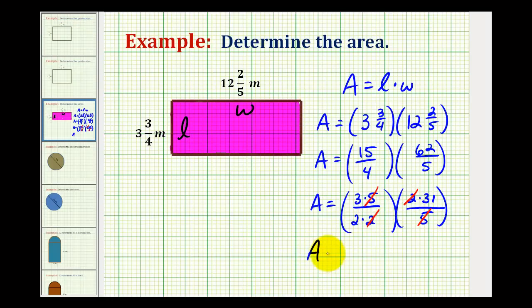So the area is going to be equal to 3×31. That's going to be 93 all over a denominator of 2.